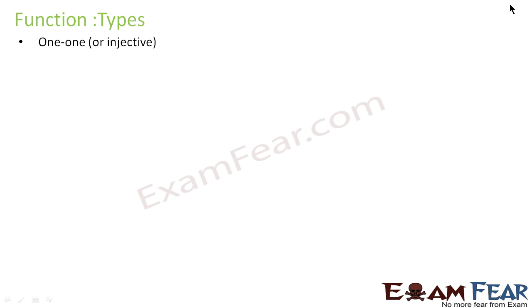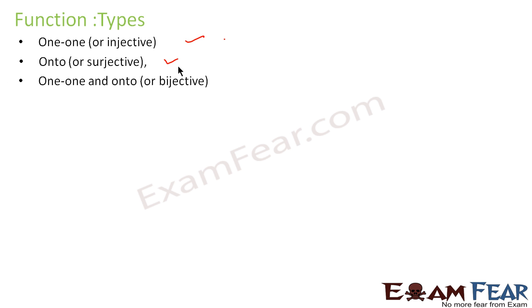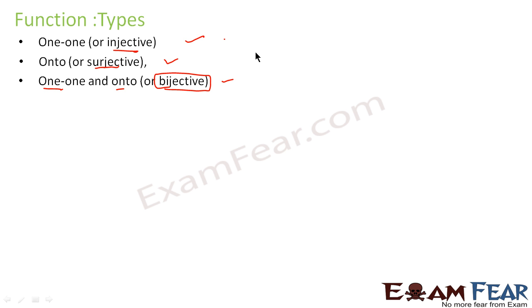We'll discuss different kinds of functions. There are three different kinds: one-one, onto, and one-one and onto. One-one function is also called injective, onto function is also called surjective, and the function that is both one-one and onto is called bijective.